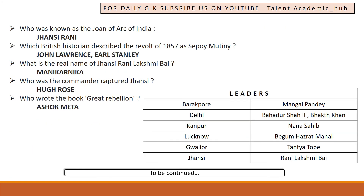Who was known as the Joan of Arc of India? It was Jhansi Rani. The British historians who described the Revolt of 1857 as the Sepoy Mutiny were John Lawrence and Earl Stanley.